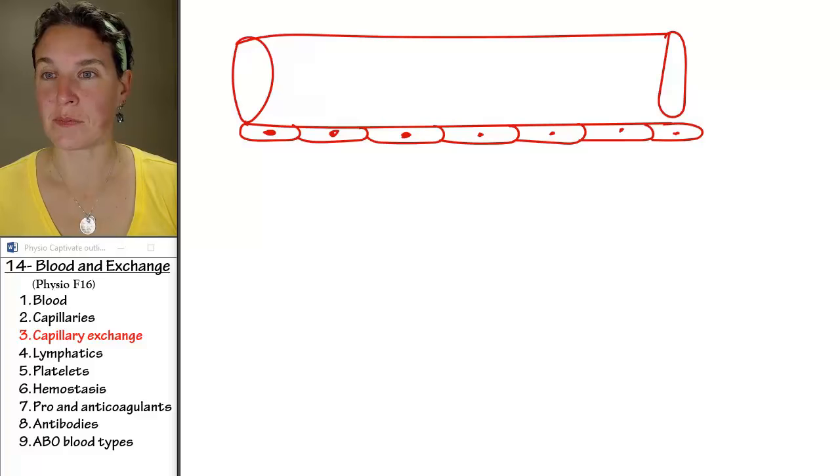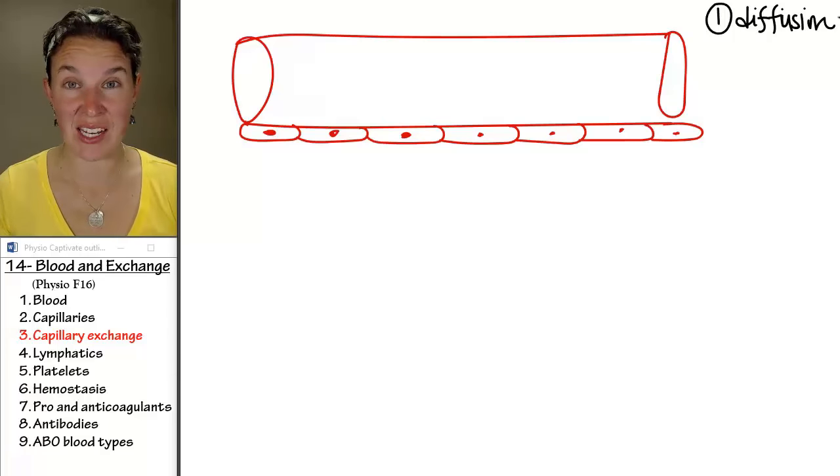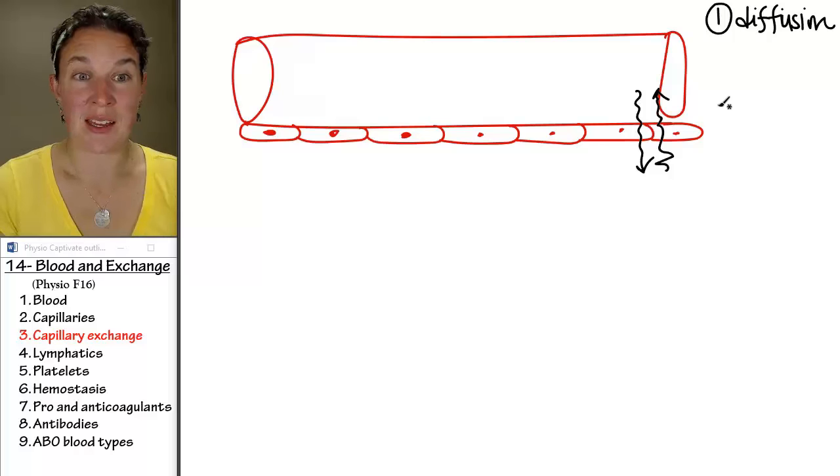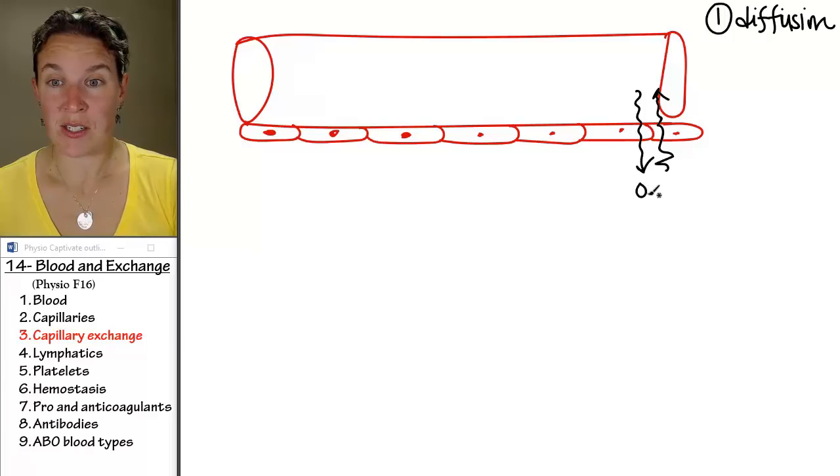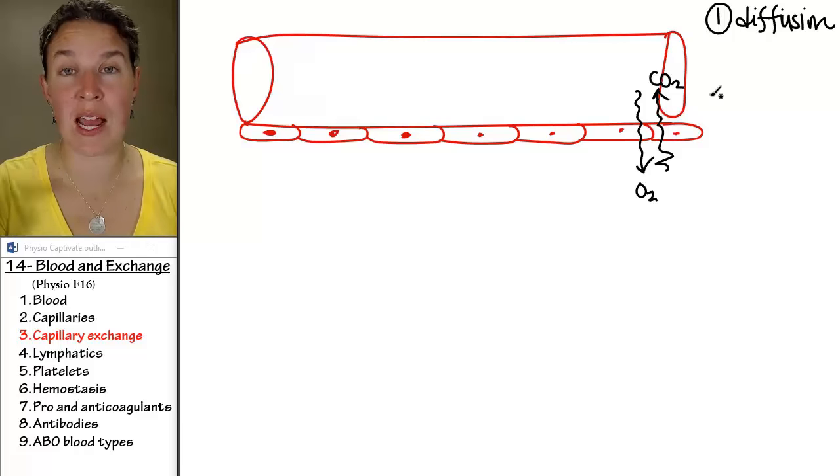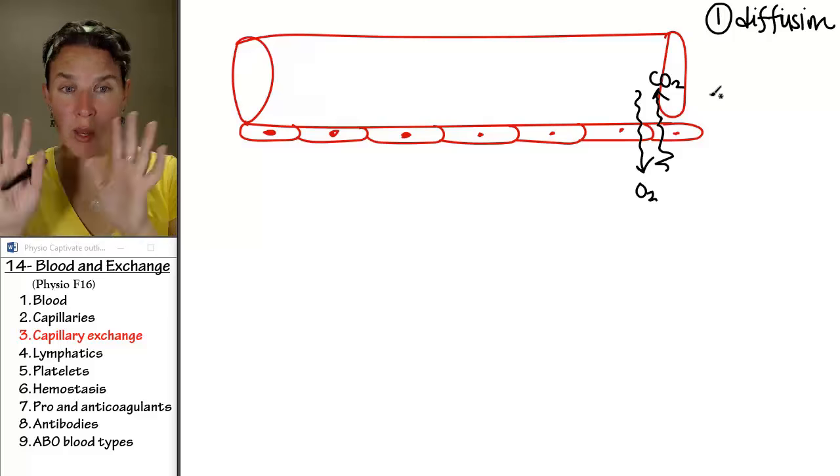Strategy number one is diffusion. Remember, our goal is just to get stuff in and out. Guess what? Some things can just move out of the blood or back in. Give me an example. Who would that be? Carbon dioxide and oxygen. These guys, I mean, we don't have to mess around. We don't have to play games. We don't have to have different tools. They're just going to zip in and out based on their concentration gradient, on their partial pressure gradient. So, that's easy. That's done. Move on.